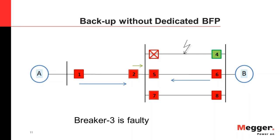Let's take an IEEE standard example — a two-source model with sources A and B and several breakers, numbered for reference. Assume there is a fault between Breaker 3 and Breaker 4. If both breakers function properly, Breaker 3 and Breaker 4 will open, cutting off the in-feed from both sources and clearing the fault.